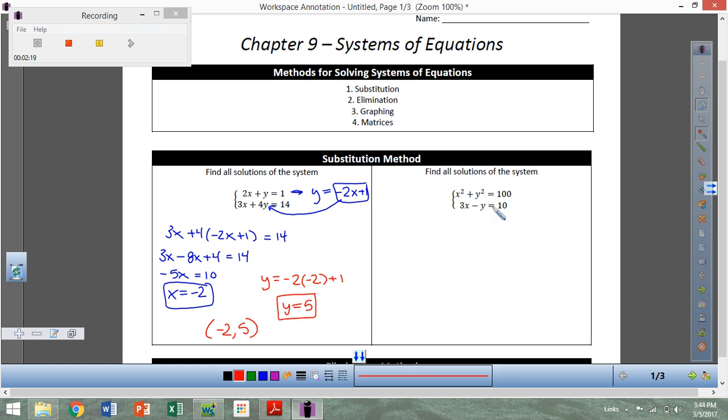I'm still going to go about solving it the same way. So I'm going to take this bottom equation, and I'm going to solve it for y. So what I would do is I would add y over to this side, subtract 10 over, so I would get y equals 3x minus 10. And then I'm going to take this 3x minus 10 and plug it in for y in this other equation. So I would have x squared plus 3x minus 10 squared equals 100. Make sure that if you're squaring a binomial, you FOIL. So this is going to be x squared plus, if I FOIL this, I get 9x squared minus 30x minus 30x, which would be minus 60x, and then plus 100. That's just FOILing 3x minus 10, and then that equals 100.